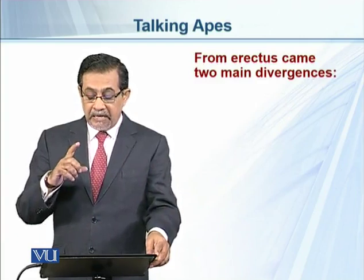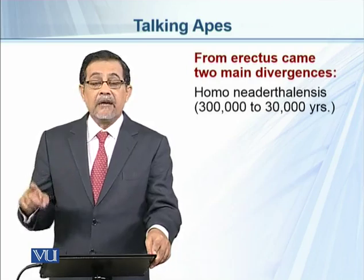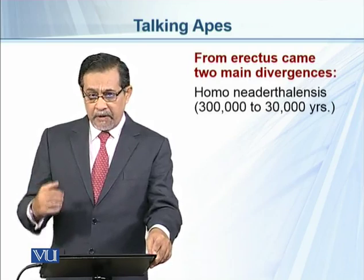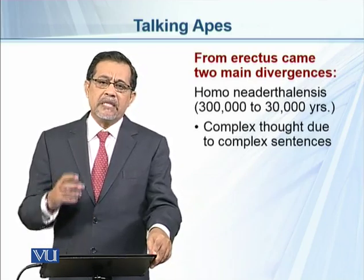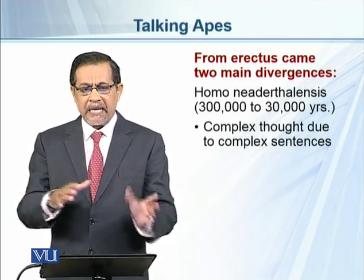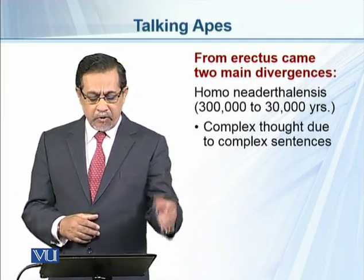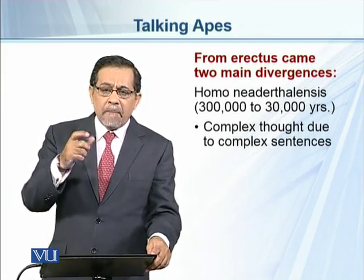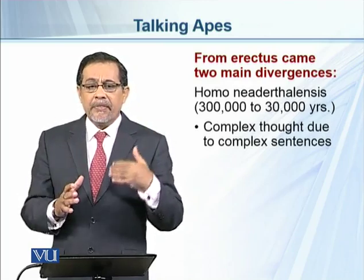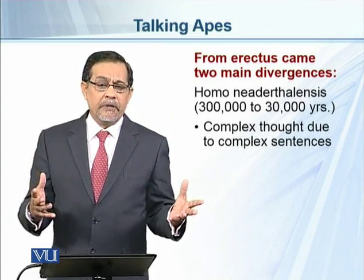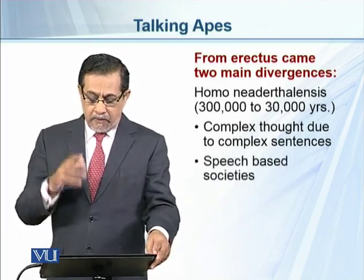From Homo erectus came two main divergences. Homo neanderthalensis, existing from almost 300,000 to 30,000 years ago, could have complex thought because they could use complex sentences — simple, complex, and compound sentences. The ability to use compound or complex sentences tells us their thought had developed, and they could think beyond food or immediate objects before them.